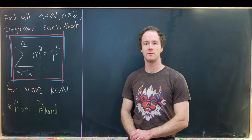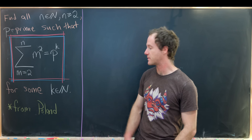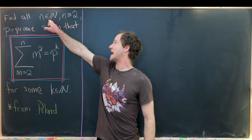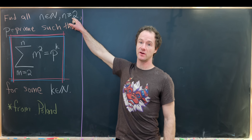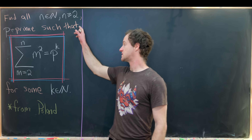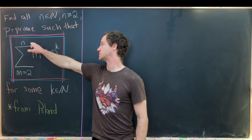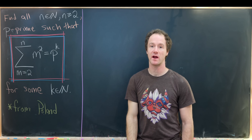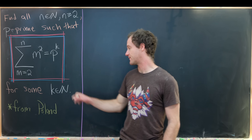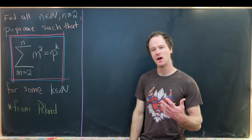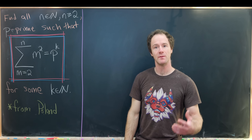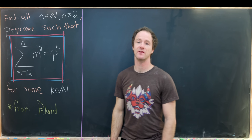Here I've got a nice number theory problem that comes from a mathematical Olympiad in Poland. Our goal is to find all natural numbers n ≥ 2, as well as all primes p, such that the sum as m goes from 2 up to n of m squared equals a power of that prime — p^k for some natural number k. Along the way we'll probably find k as well, but our real goal is just to find n and p.